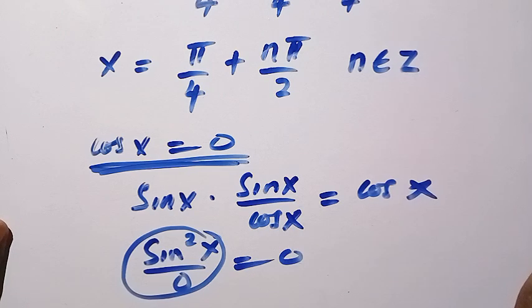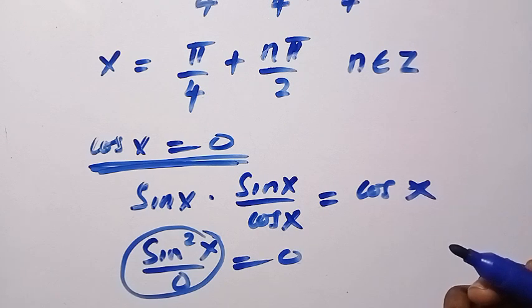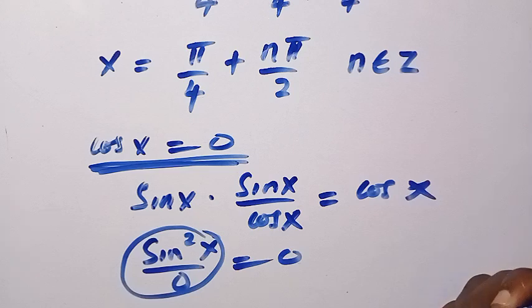And we can do it in this way. So where I let sin squared x equals 1 minus cos squared x, we can actually make cos squared x to be equal to 1 minus sin squared x and we solve for sin instead of cos.